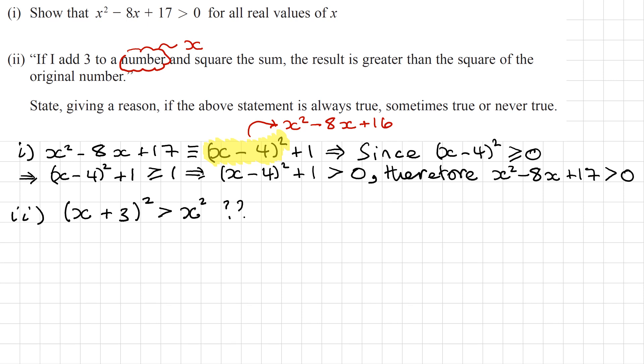So let's expand the brackets. So if I do that, I'll get x squared plus 3x plus 3x plus 6x and then plus 3 times 3 plus 9 is greater than x squared. Let's take away x squared from both sides. So I'll have 6x plus 9 is greater than 0.